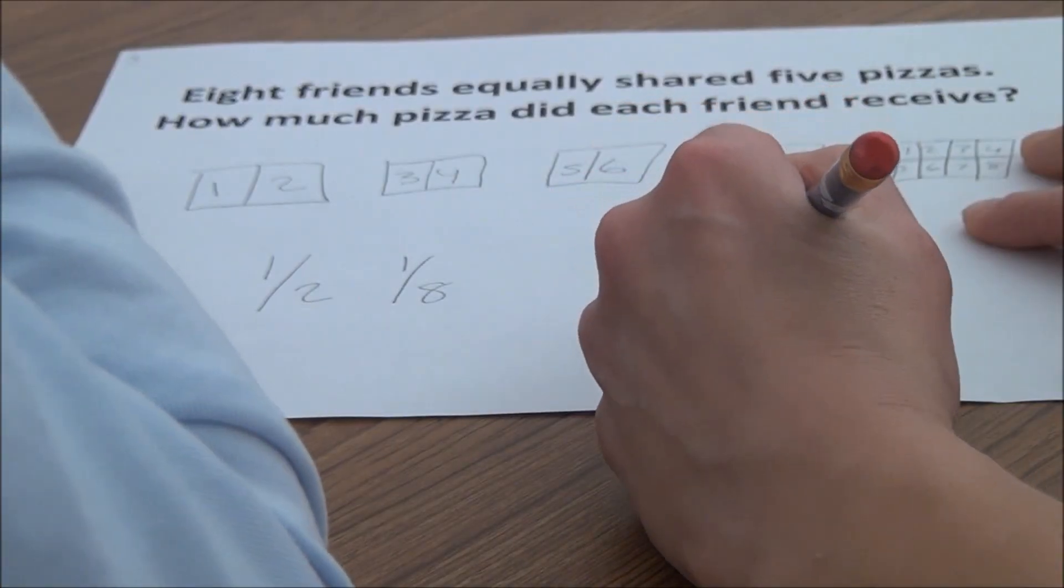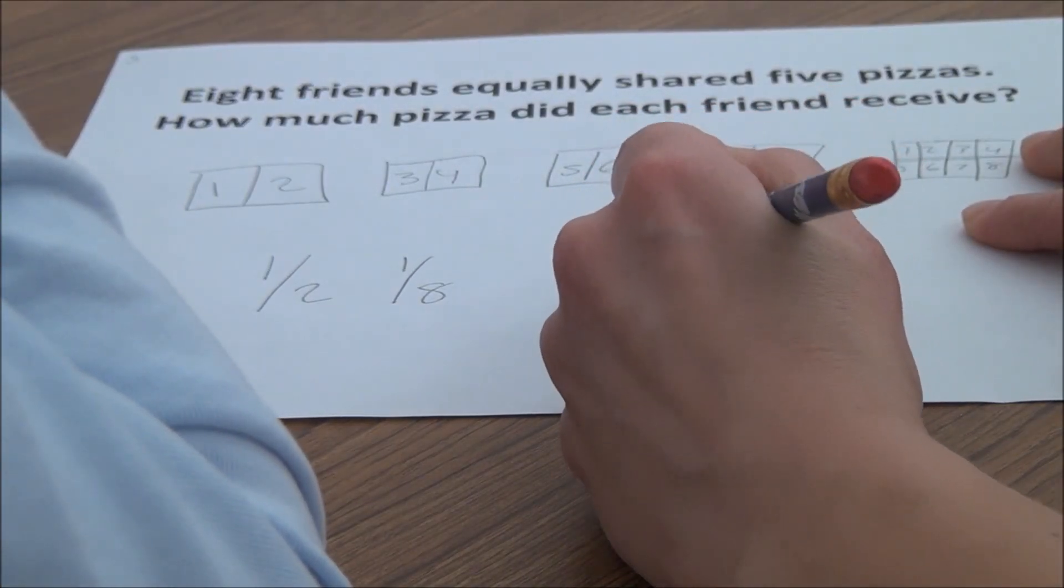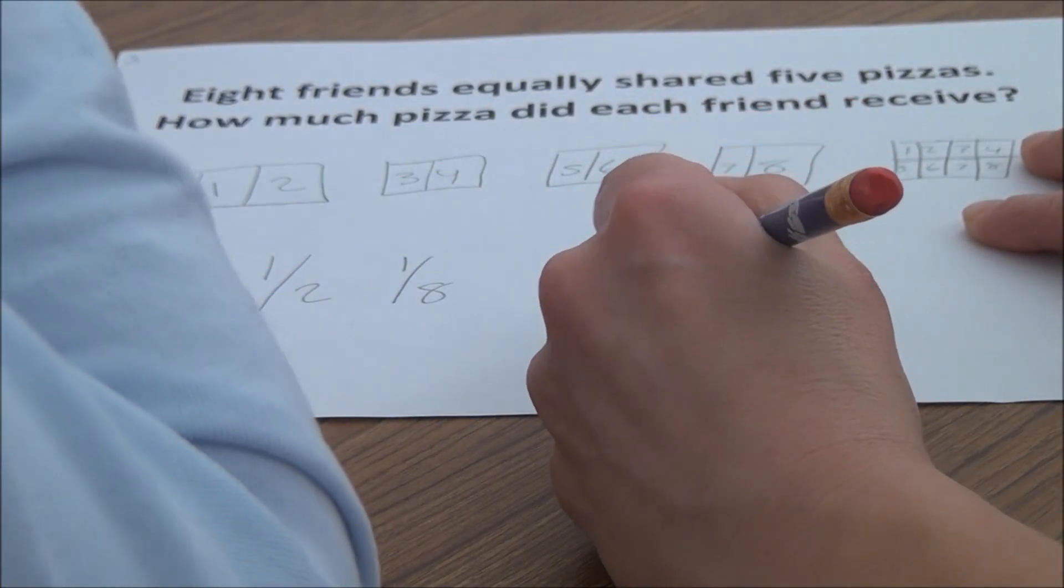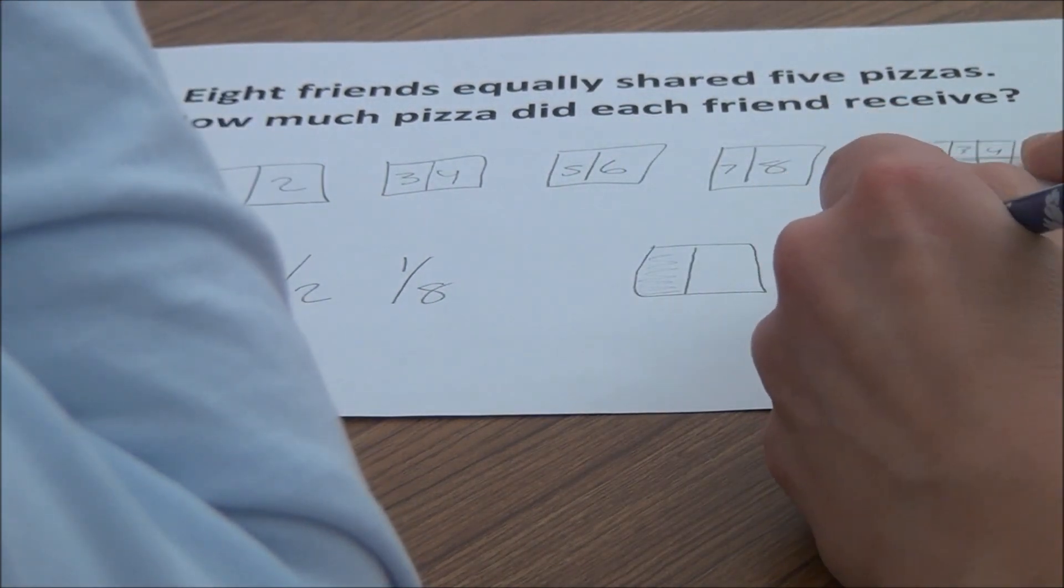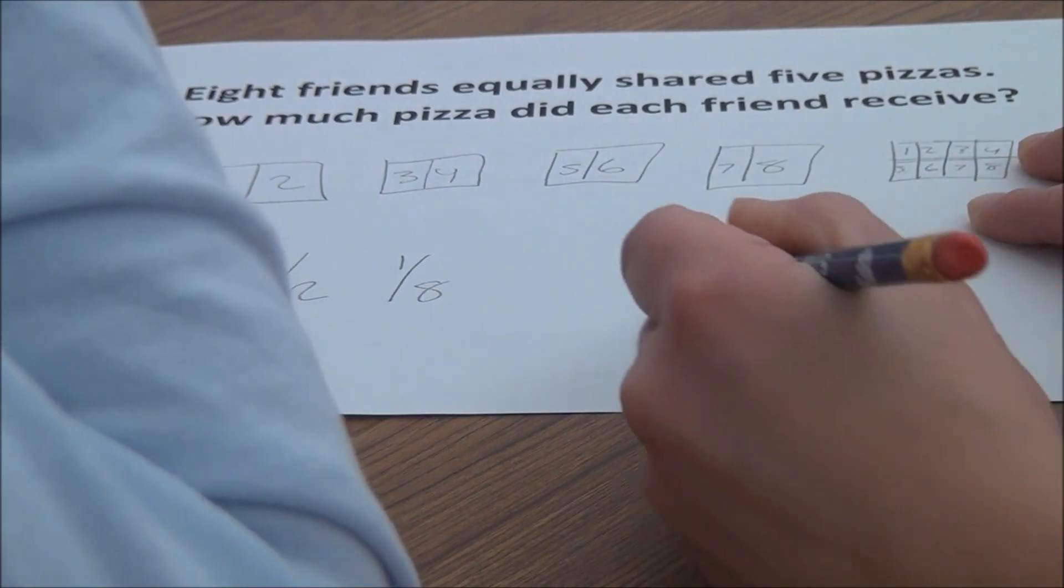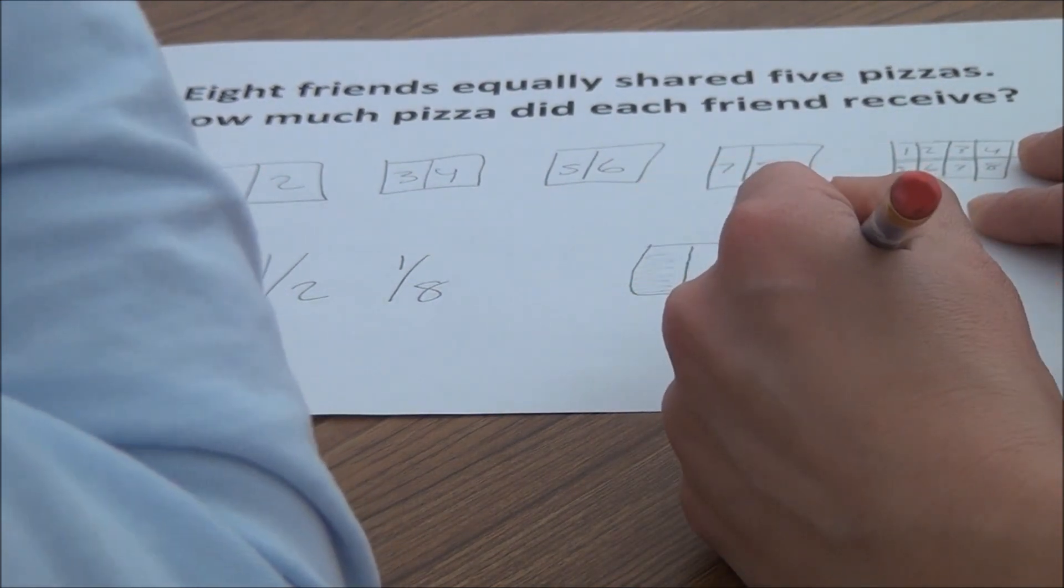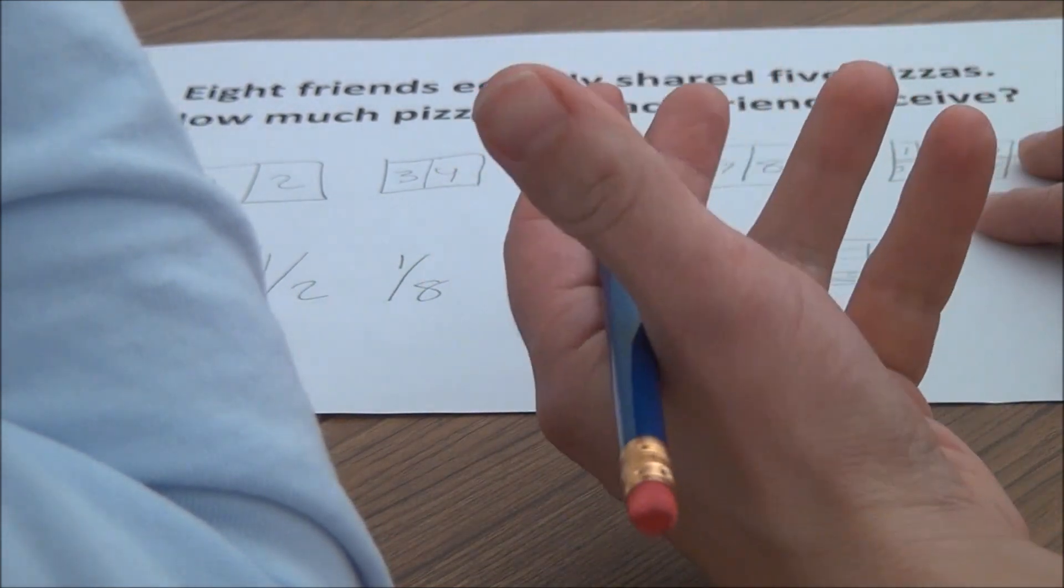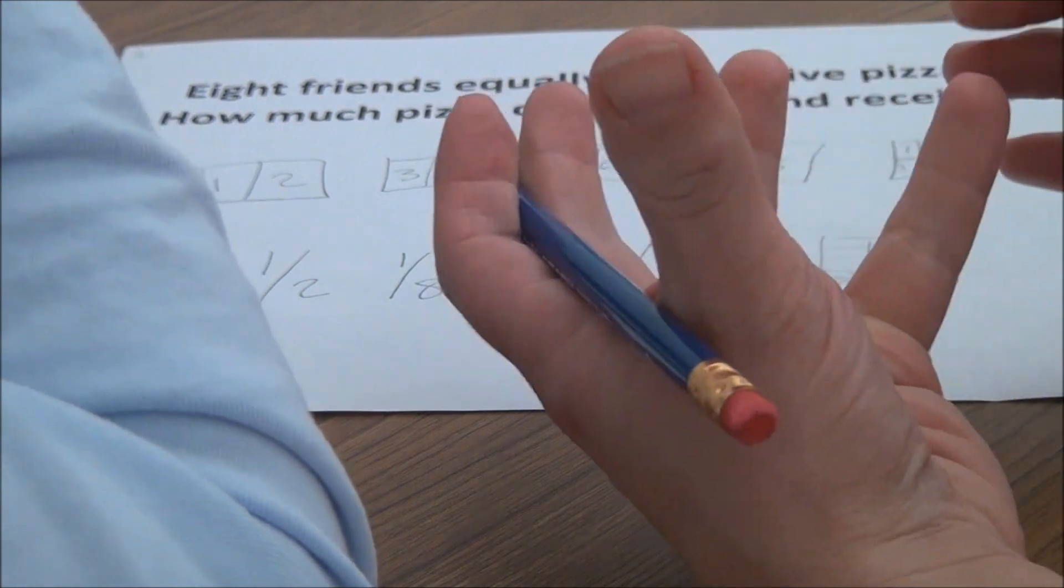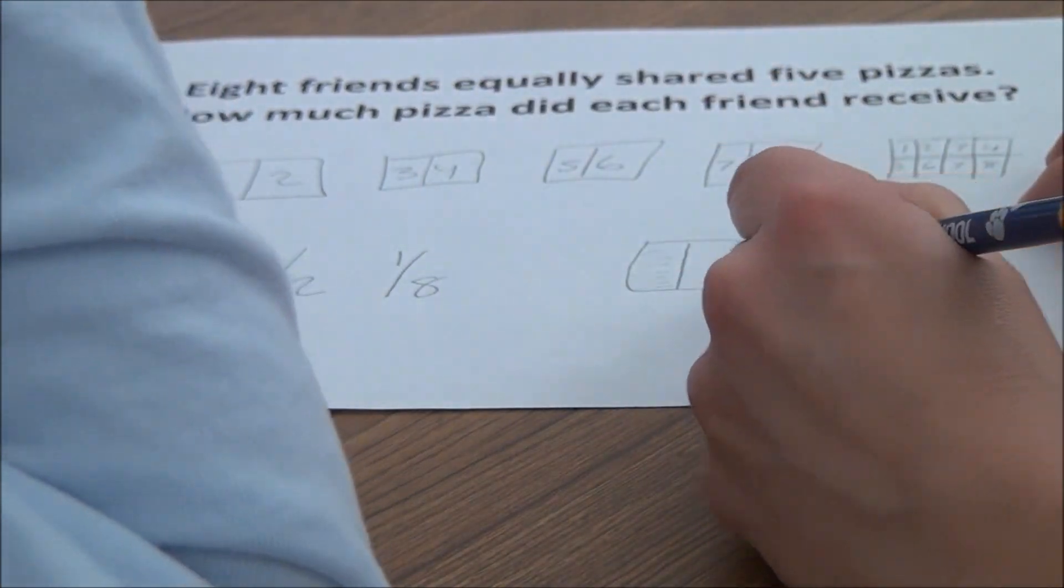Okay. So that's a good question. So you're telling me that each person is going to get one half. Let me just shade this in. And each person is going to get one eighth. So we can't call both of these halves. We can't call both of these eighths. We need to figure out a way to have a common name to call both of these things.